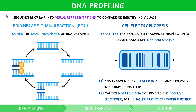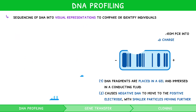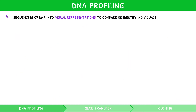DNA profiling is the comparison of this banding pattern to a genetic database or to several individuals to identify the DNA sample. It has two key uses: crime scene investigation and paternity testing.